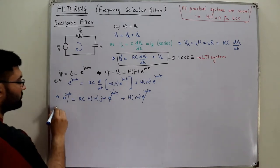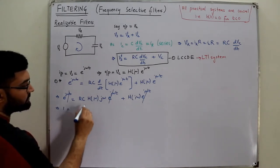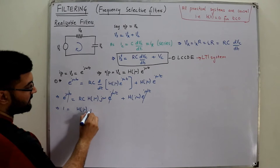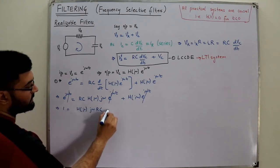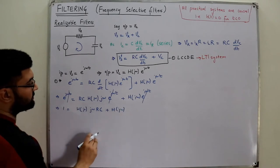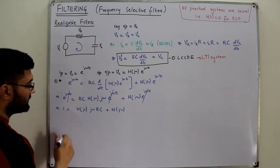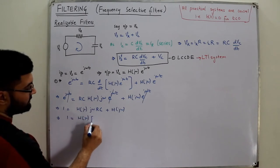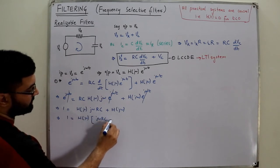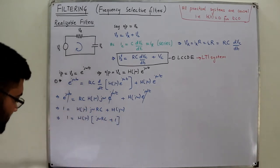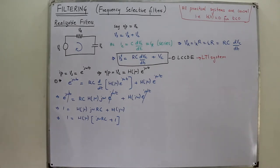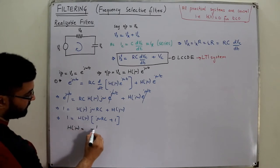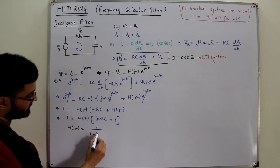After canceling e^(jωt), we get: 1 = H(jω) · jωRC + H(jω). Taking H(jω) common: 1 = H(jω)(jωRC + 1). Therefore H(jω) = 1 / (1 + jωRC).